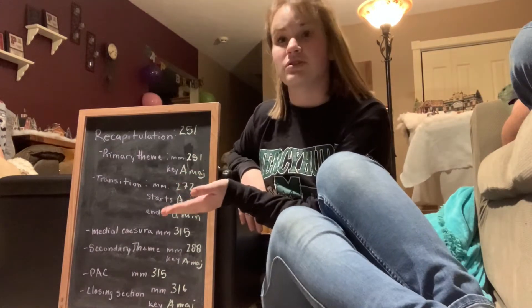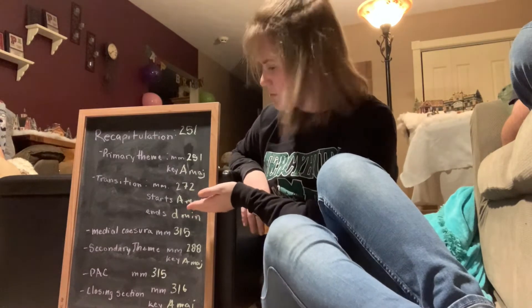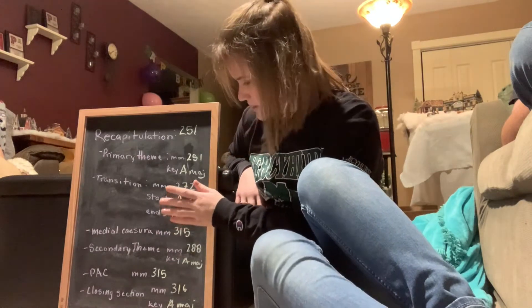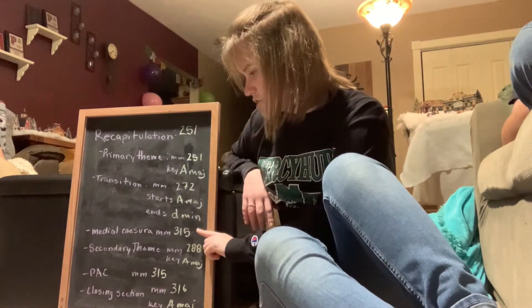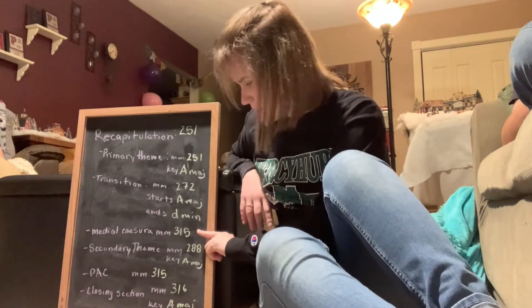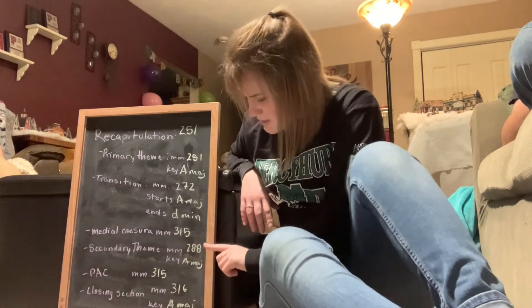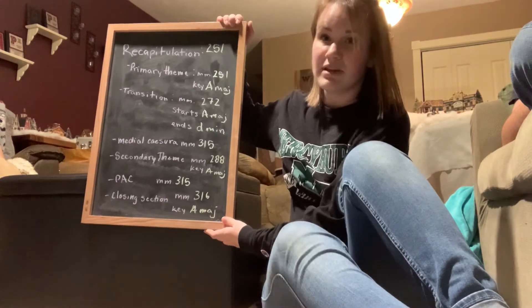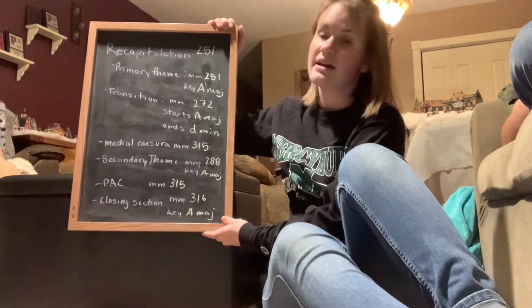Up next, we're going to talk about the recapitulation, which starts in measure 251. First up, you have the primary theme, which is in measure 251 in A major. The transition comes in in measure 272 in A major and moves to D minor. The medial cajura in the recapitulation is in measure 315. The secondary theme starts in measure 288 in the key of A major. The pack comes in in measure 315, and the closing section begins in measure 316 in the key of A major again.